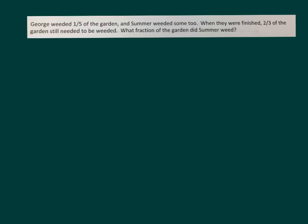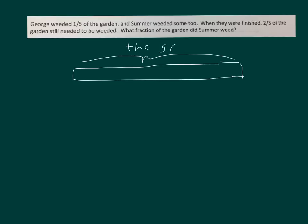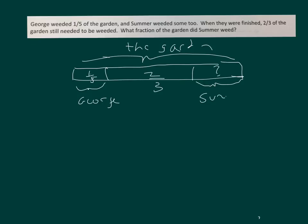We can take a look at the garden. The whole is one, and part of it George weeded — in fact, one-fifth was George. Two-thirds was left, and the other part was Summer. That's the question mark for how much Summer weeded.